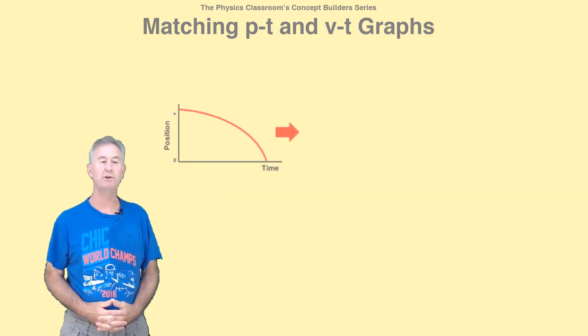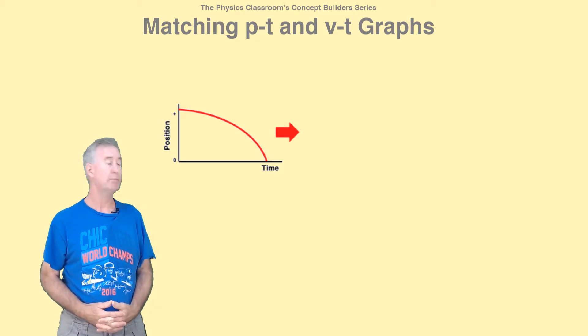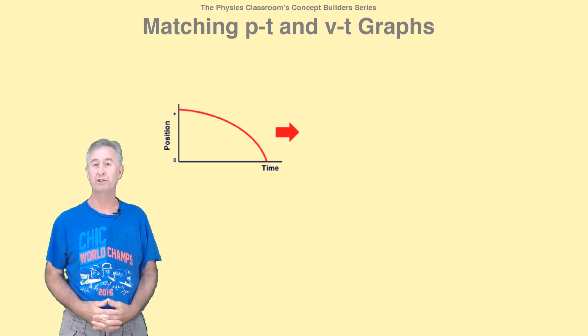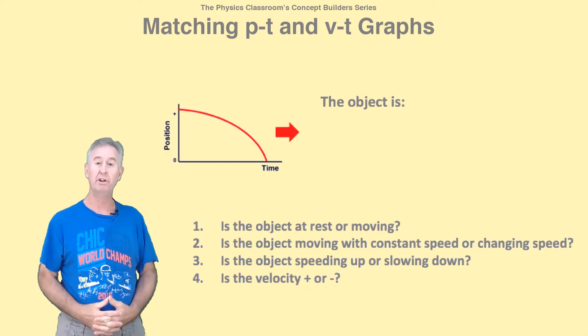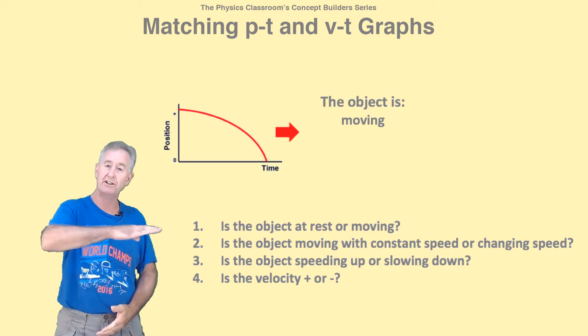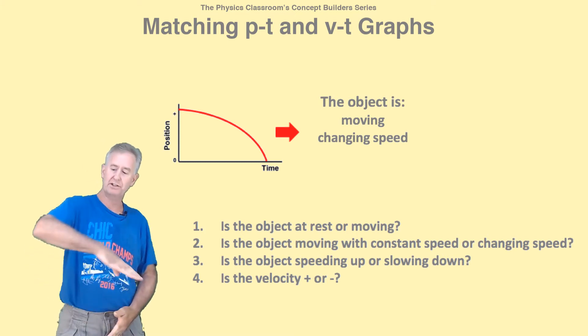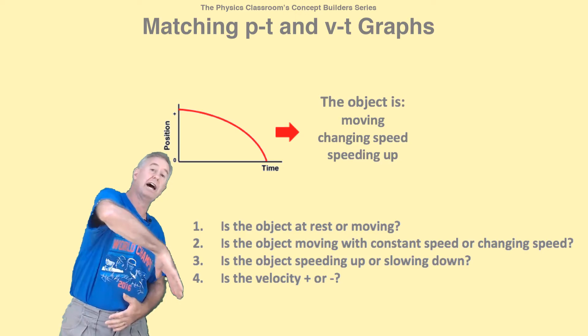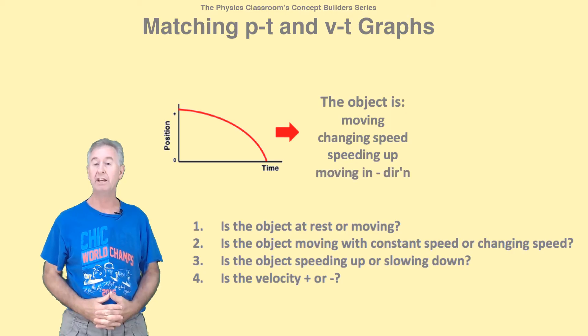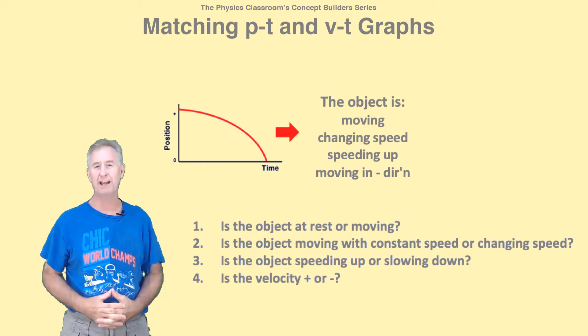As an example, suppose you have this PT graph and you want to match it to a VT graph. Begin by translating the graph into words using the four essential questions I discussed. When I look at this, I realize the object's moving because the line's not horizontal. Second, I realize the object has a changing speed because the line's not straight and diagonal. Third, I realize that the object is speeding up because the line starts flat and gets steep. And fourth, I recognize the object has a negative velocity because the slope is downward or negative.